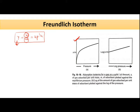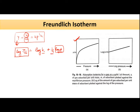If I take log on both sides, I will get: log(x/m) = log k + (1/n)·log p. So if I now plot log(x/m) versus log p, I will get a straight line. From this straight line, I can get the value of k and n by simply noting down the intercept and the slope. The intercept will give me the value of k and from the slope I can get the value of n.